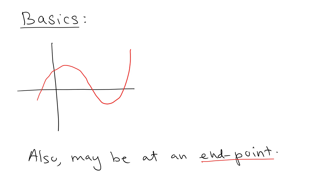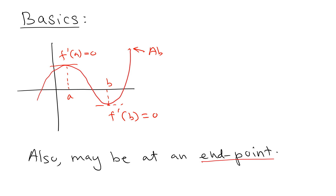Let's talk about another case. Sometimes the derivative is zero at point a and also zero at point b, but unfortunately the absolute maximum happens at a corner — not at either of those critical points. So if you are looking for the absolute maximum, you cannot find it using only the critical points, where critical point means where the derivative is zero.